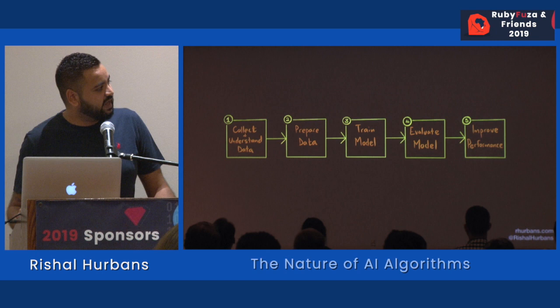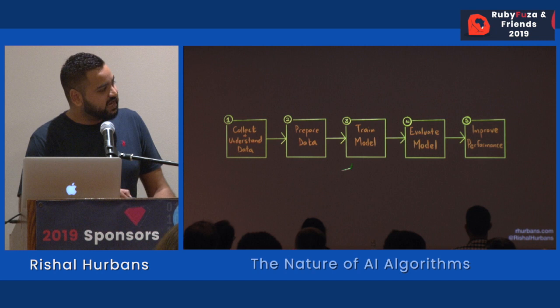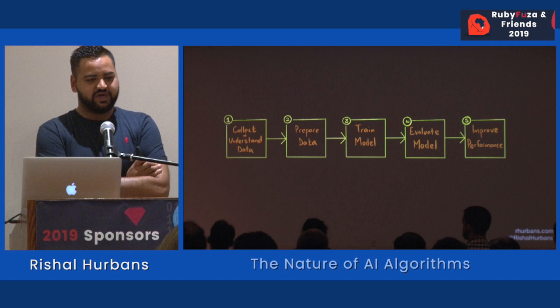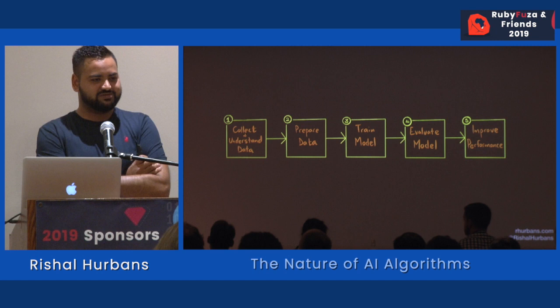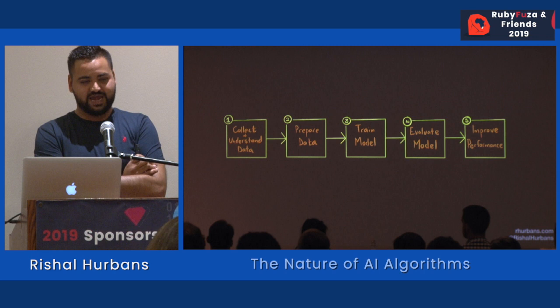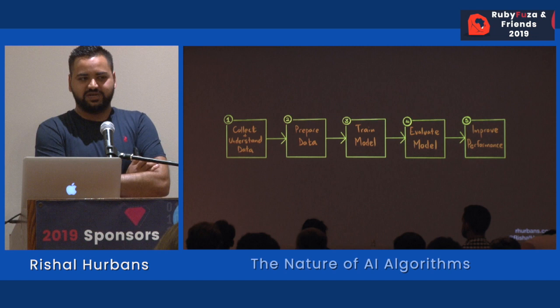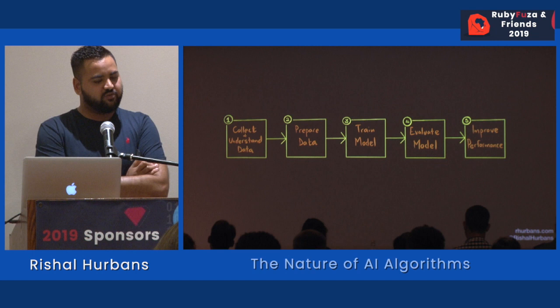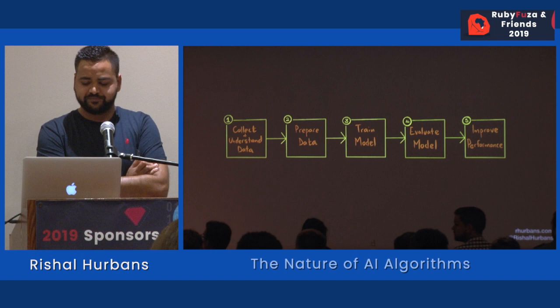This is the general process of figuring that out: collect and understand your data, prepare your data, train your model — that's actually where the machine learning is happening — evaluate your model, and improve its performance. If you know any data scientists, they're not doing cool stuff like putting Obama's face on Trump. They're actually just fixing data, preparing it, understanding it, and trying different models that give better performance. It's experimentation. And if you think about data science and machine learning, it's nothing new — it's based on statistics. We've been doing it for years. It's just become more powerful now because we have more access to data and better computing power.